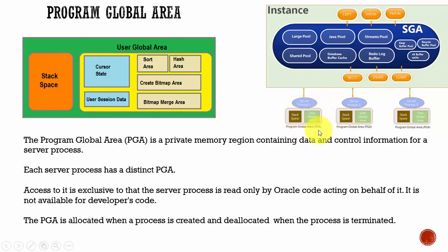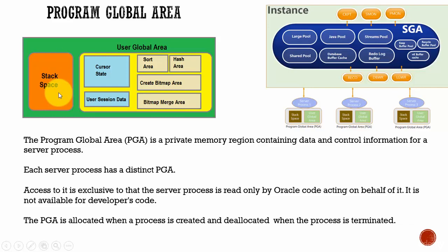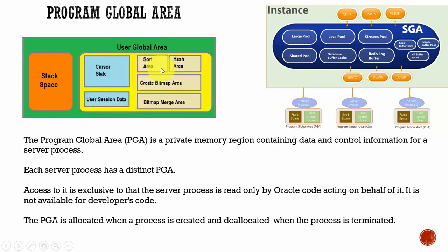Within the Program Global Area, we have small memory structures. The main one is the stack space, which is used to hold all the session variables, arrays, and some other important information. We also have the User Global Area, which contains cursor state, user session data, sort area, hash area, create bitmap area, and bitmap merge area.